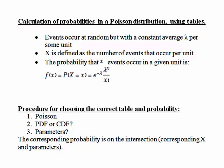This recording is the second in a series on calculating probabilities in a Poisson distribution using statistical tables. Recall that for a Poisson distribution, events occur at random but with a constant average lambda per some unit.